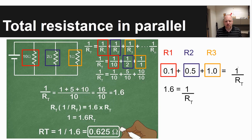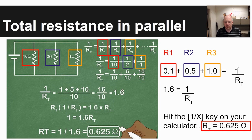That, however, is not your answer. A lot of students kind of stop at that last step and just leave 1.6 as their answer. But that is equal to one divided by resistance total. What you're looking for is resistance total, not one divided by resistance total.